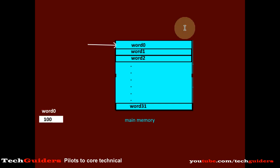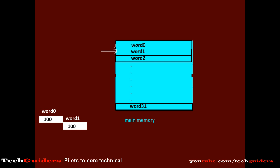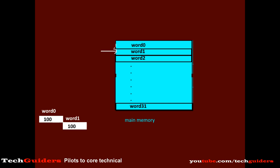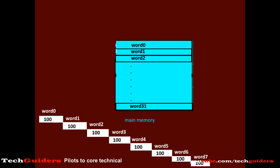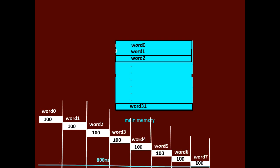It will wait for 100 nanoseconds to complete the data transfer for word 0. Then word 1 can be processed — for another 100 nanoseconds it should be completed, then only the next request can be serviced. So next word 2, word 3 and so on. So consider the total data transfer time — it depends upon the number of requests and the time taken for each request, which is 8 into 100: 800 nanoseconds.